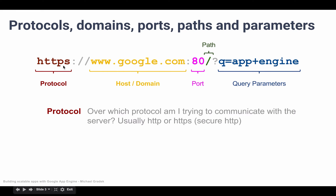The first thing we have is the protocol. The protocol is basically telling how we are going to communicate with the server. All websites run over the HTTP or the HTTPS protocol, so we don't even need to worry about this. HTTPS is simply a secure version of HTTP — it's just the standard we use to communicate between servers to request websites.